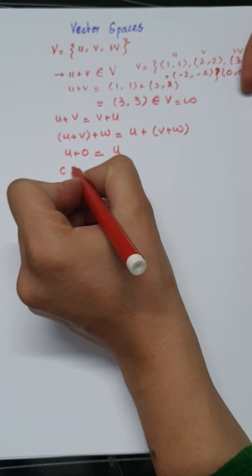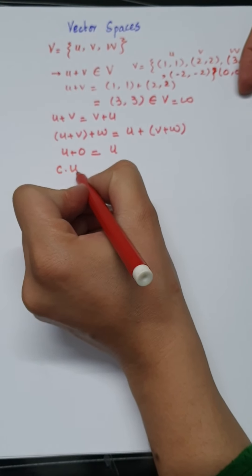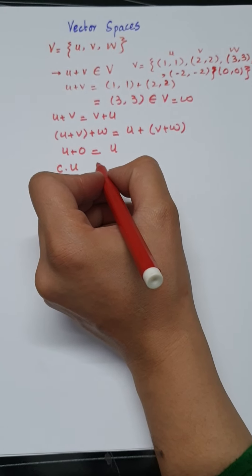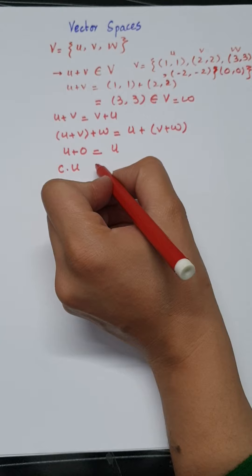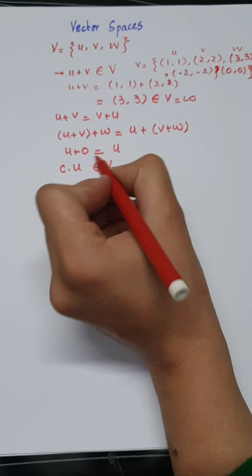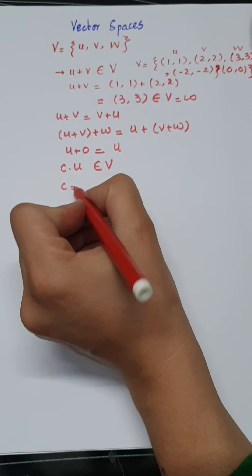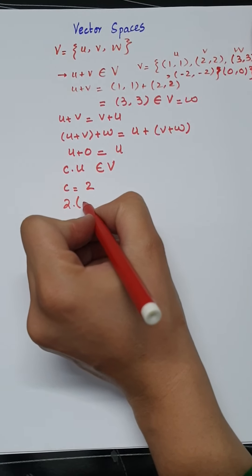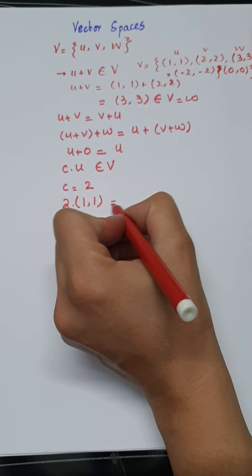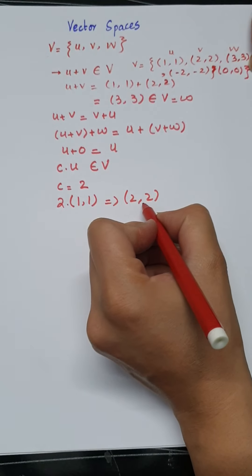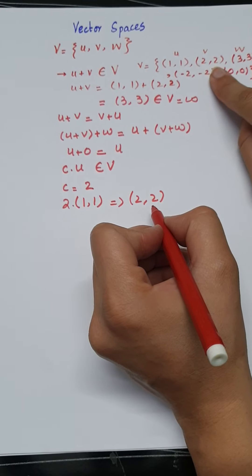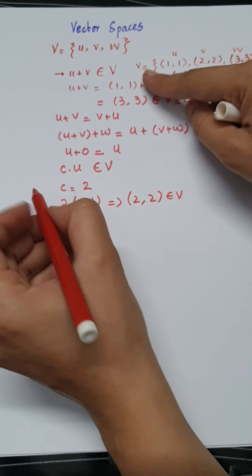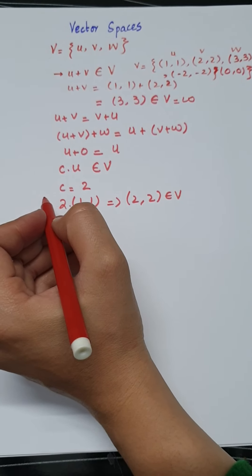The next property is that the scalar multiple of any vector U, denoted C times U, should belong to the set of vectors V. For example, if scalar C equals 2 and we multiply it by vector U = (1,1), the resultant is (2,2), and you can see (2,2) is also part of this set V. So this also belongs to V — this is the fifth property that needs to be satisfied.